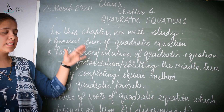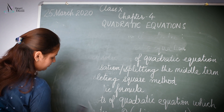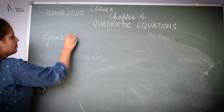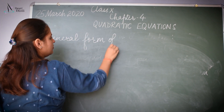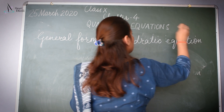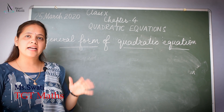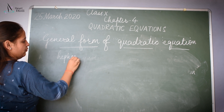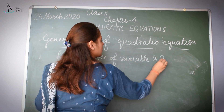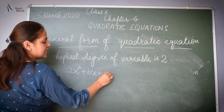So one by one we are going to discuss each of these topics in detail. First topic: the general form of quadratic equation. As we have already studied in quadratic polynomials, the highest degree of the variable is 2. So the general form of quadratic equation is of the form AX² + BX + C = 0.